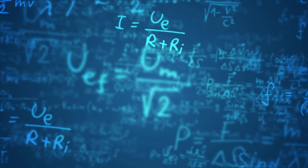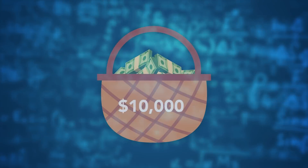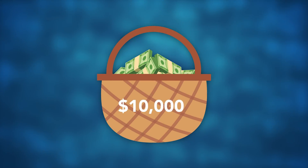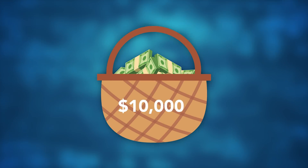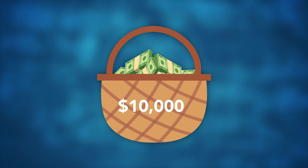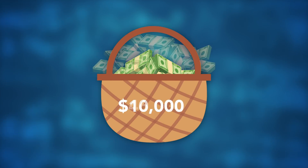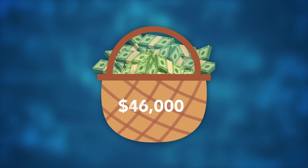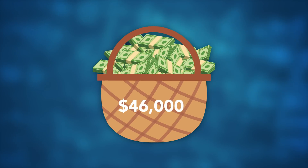For example, in 1975, $10,000 would have gotten you a specific basket of goods and services. By 2018, that same basket would have cost around $46,000.